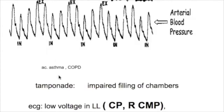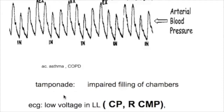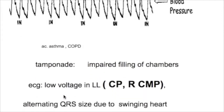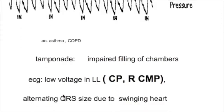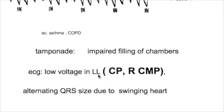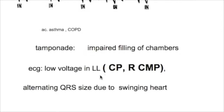What happens in cardiac tamponade? In cardiac tamponade, there is impaired filling of the chambers because fluid accumulates in the pericardial cavity. The ECG in cardiac tamponade shows a low voltage ECG in limb leads.